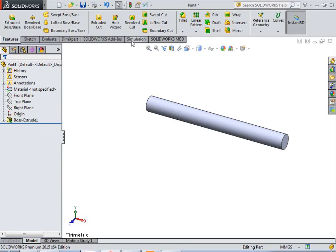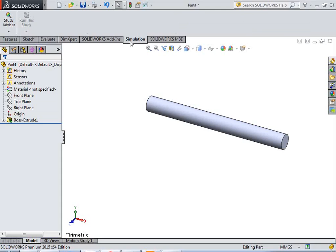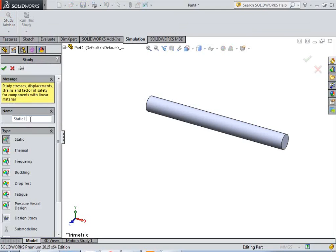Now, we will enter in the SolidWorks simulation module. Click on simulations, again, click on new study, give the name torsion, static, okay.